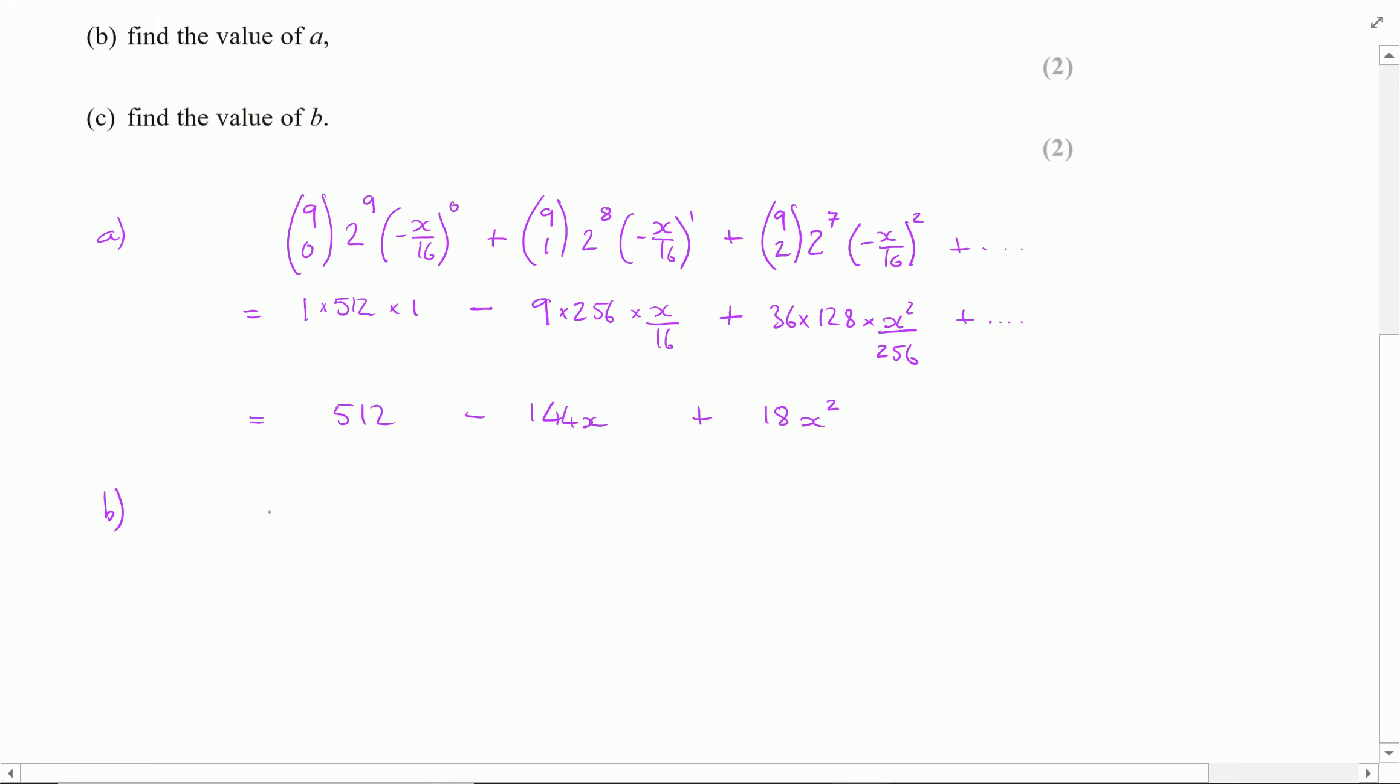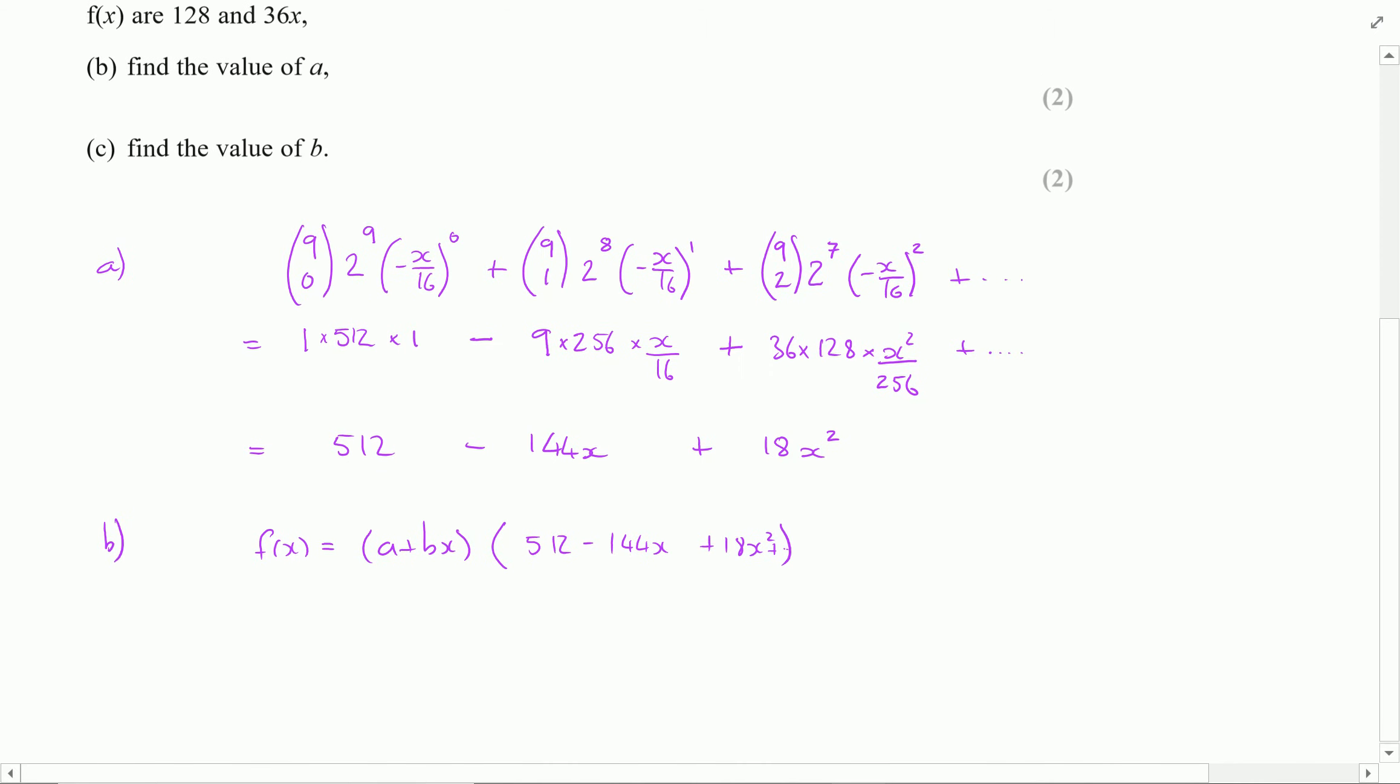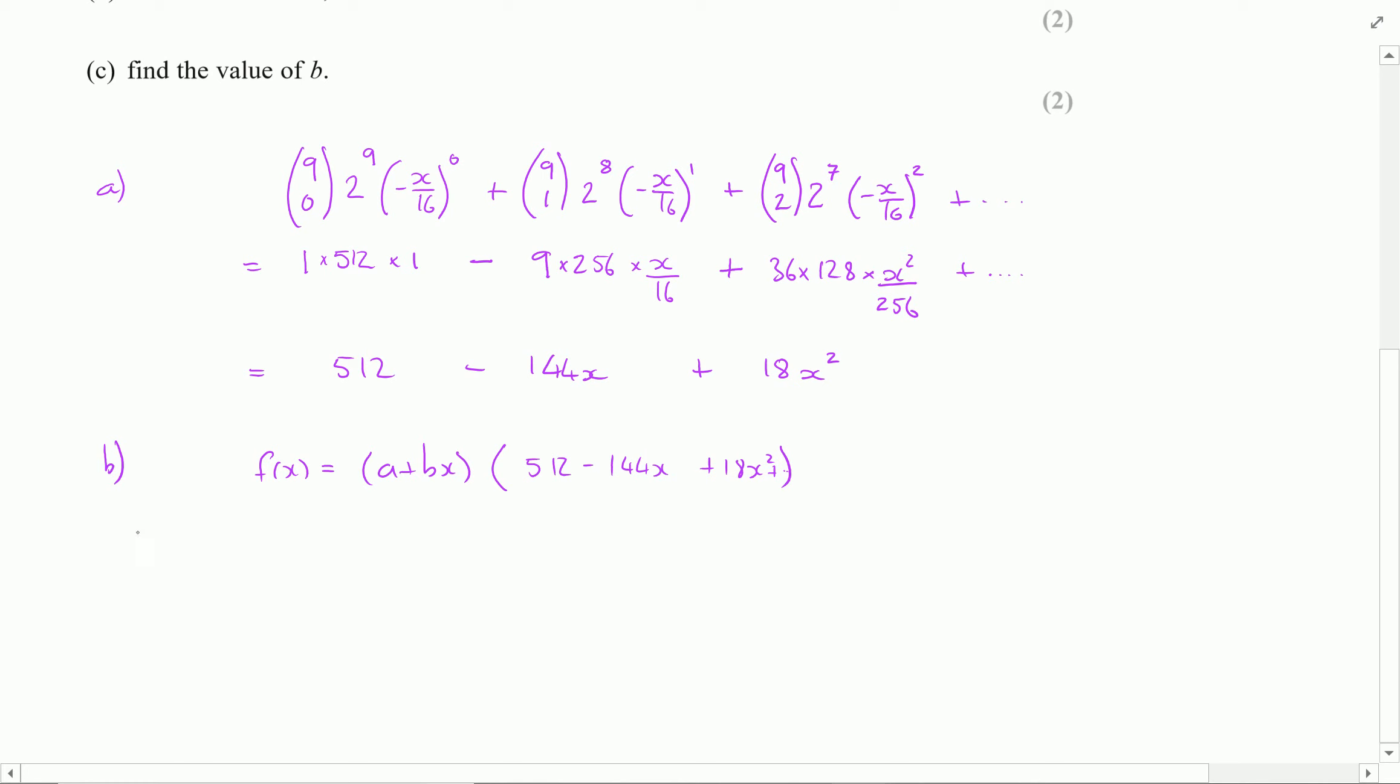Because we're told f of x is equal to a plus bx times that expansion. Now that expansion I know is 512 minus 144x plus 18x squared. And what do I know f of x is equal to? Well I don't really know what f of x is equal to. I know the first two terms are 128 and 36.